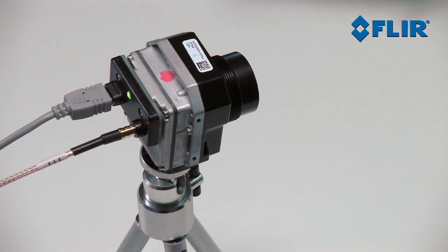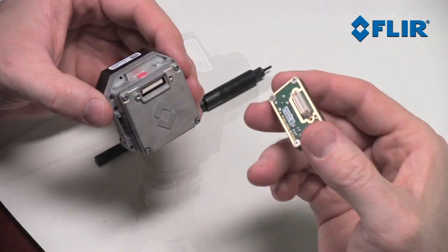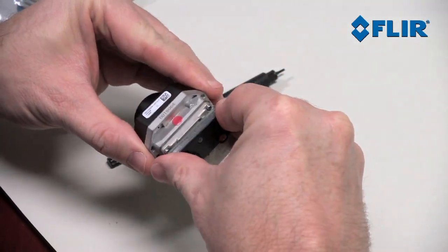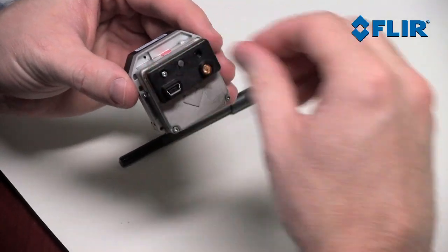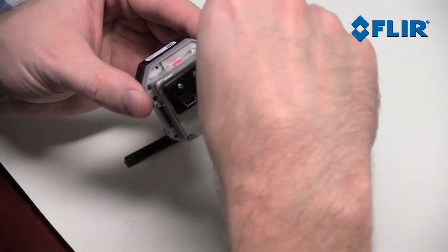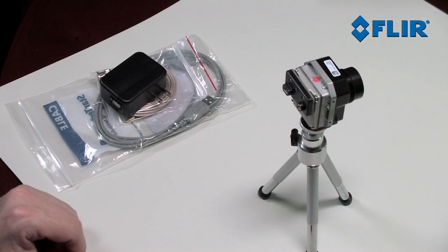The quickest and easiest way to view video from TAU-2 is by using the VPC module. So take the VPC module, connect it to the TAU-2 by aligning the 50-pin connector, and use the included socket head cap screws to secure the module to the camera.